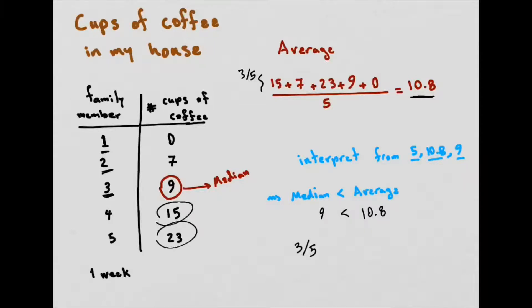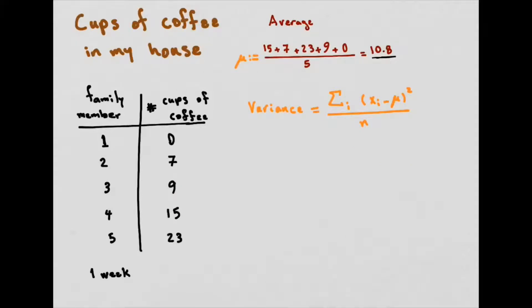But this doesn't really tell me how far my data points usually are from the average. For that, we look at the variance and standard deviation. So I'm going to call my average mu, it's 10.8. The variance is the sum of the differences. So the xi's are my entries. I sum up all the differences of my data with my average mu and I square all these differences, and then I divide them by the number of entries I have. So in our example, it's the difference of 0 and 10.8, the difference of 7 and 10.8, each of these differences squared summed up, which comes up to 300.8, and then I divide 300.8 by 5.